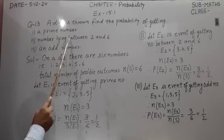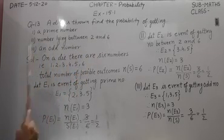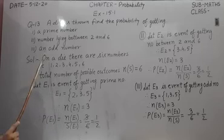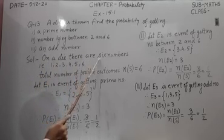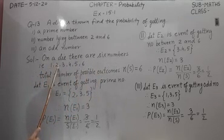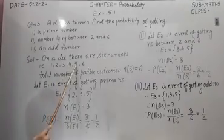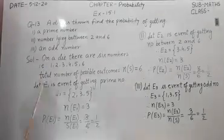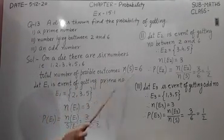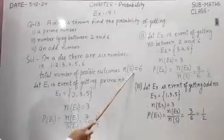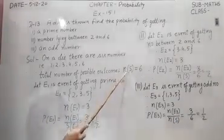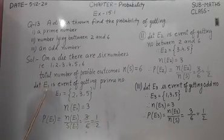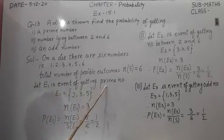a number lying between 2 and 6; third part, an odd number. You know that on a die there are six numbers: 1, 2, 3, 4, 5, 6. It means when we throw a die there are total number of possible outcomes 6. We write total number of outcomes as n(S).